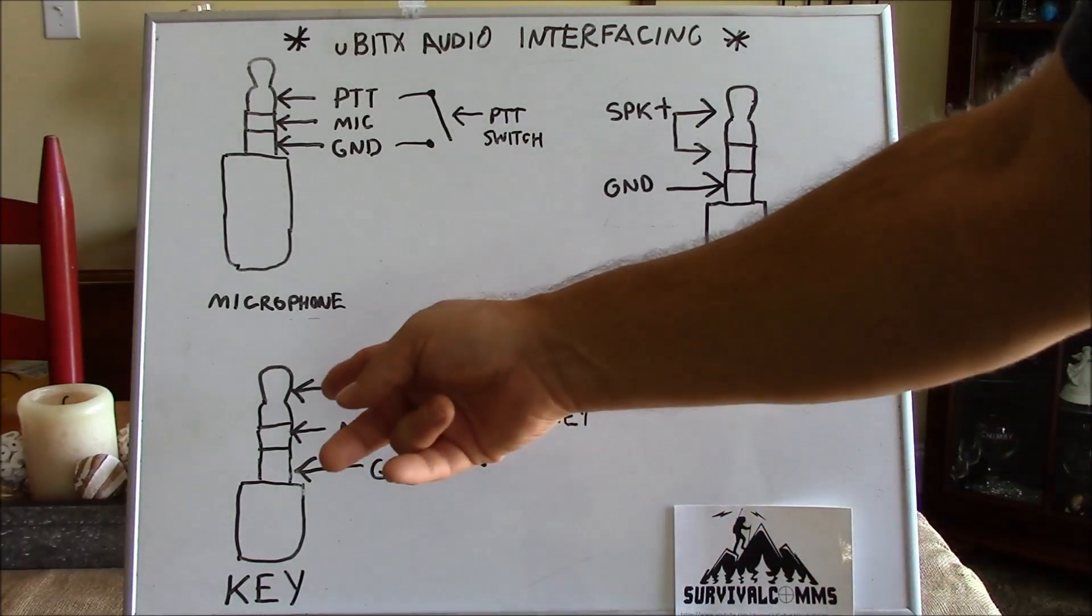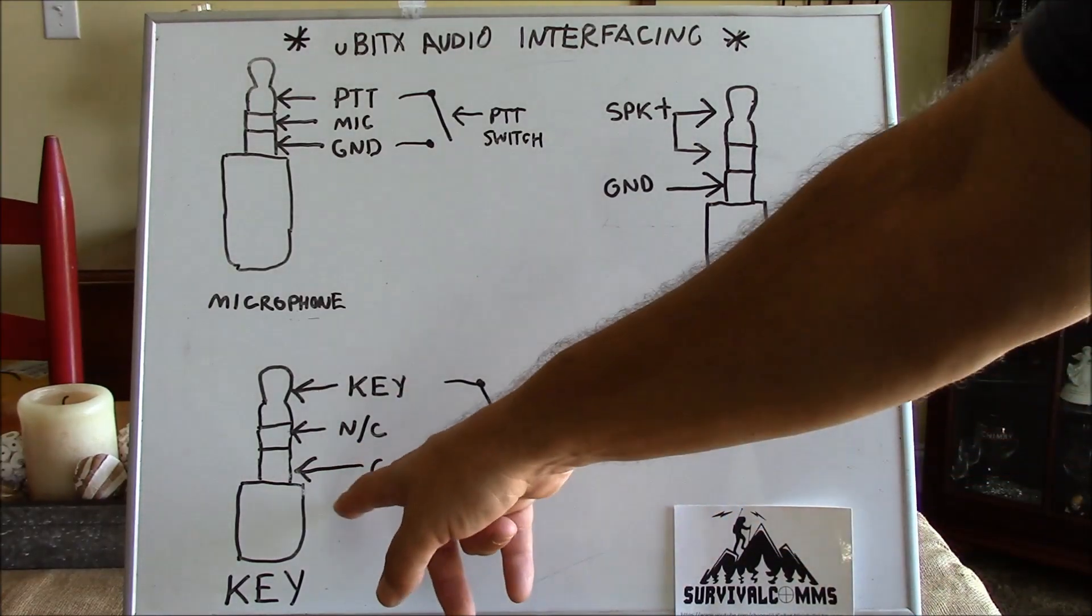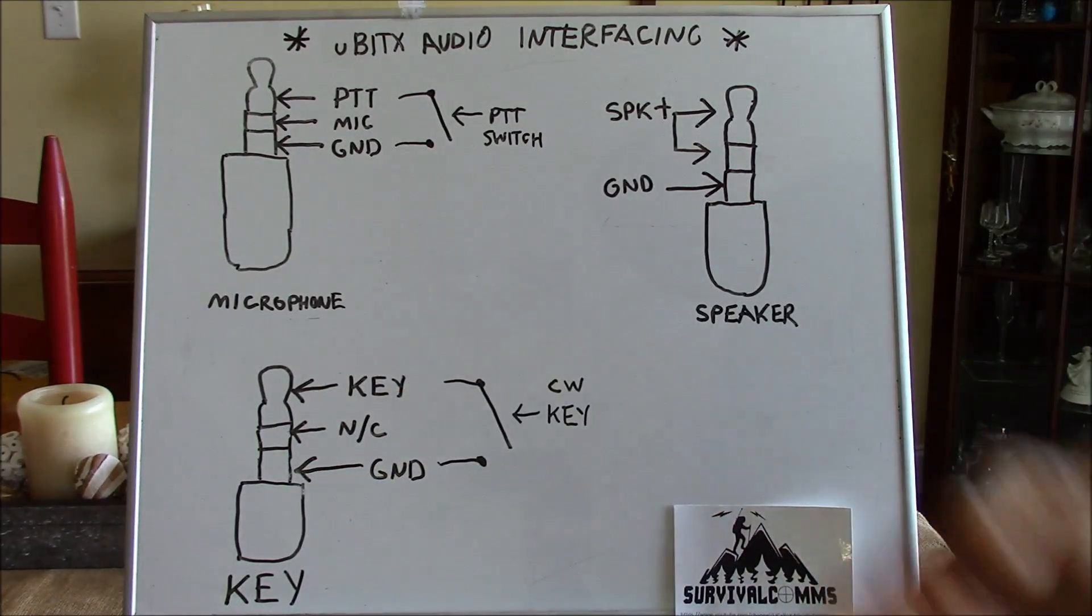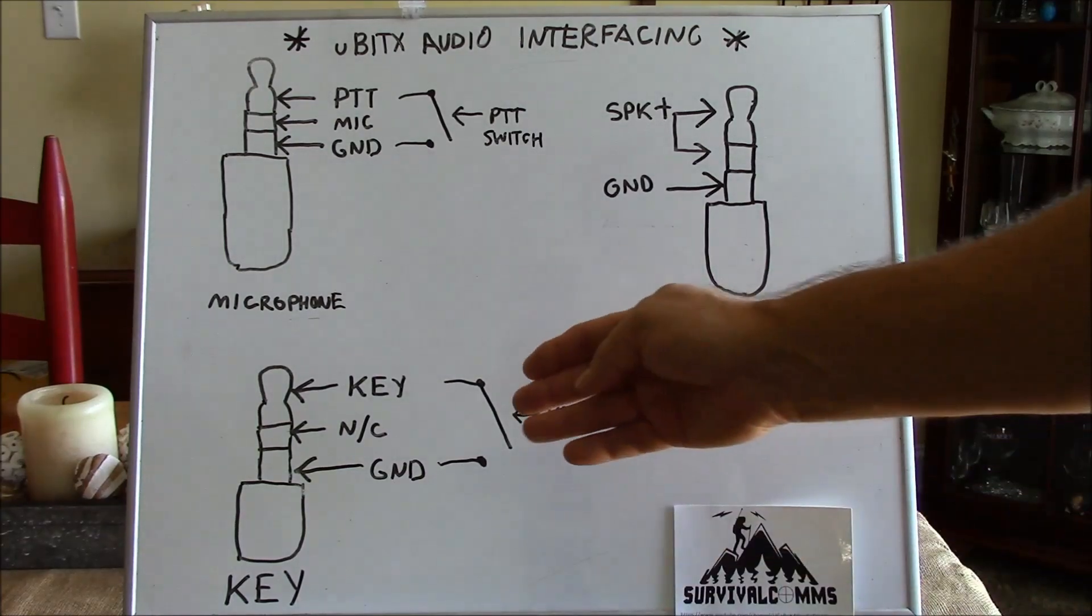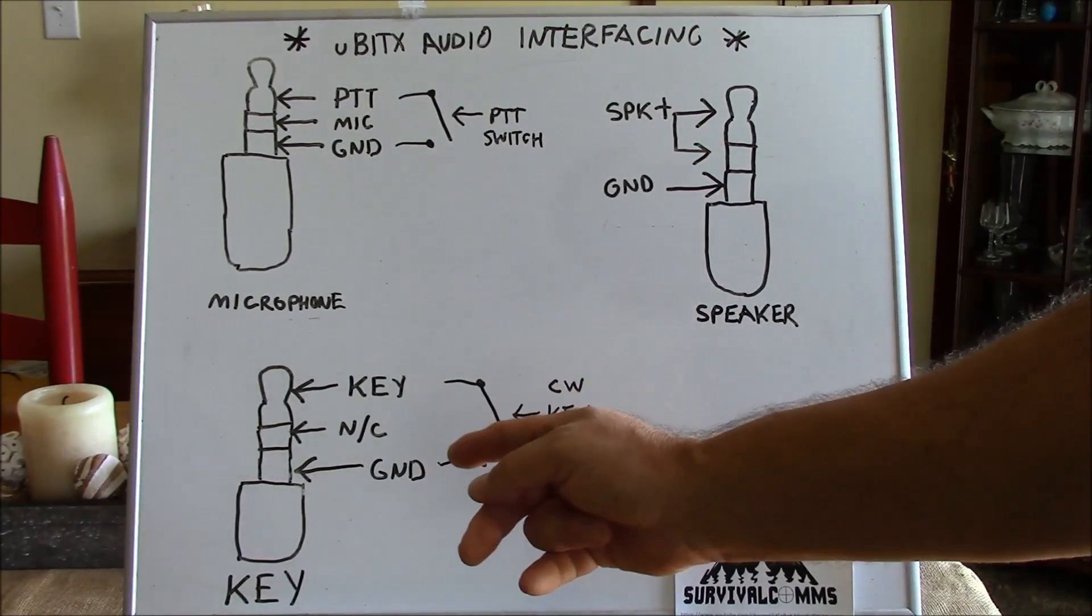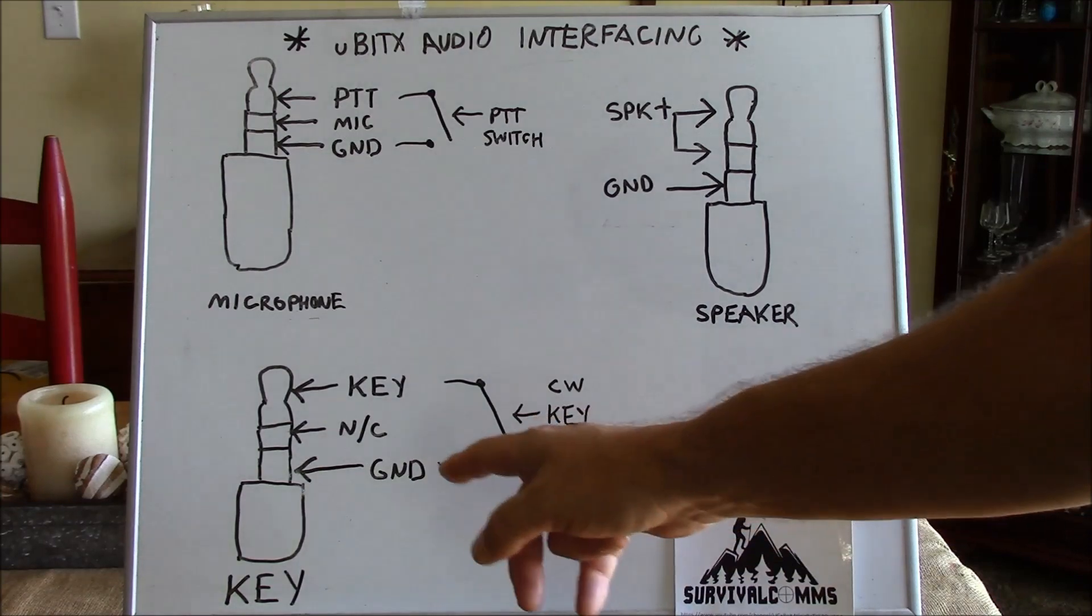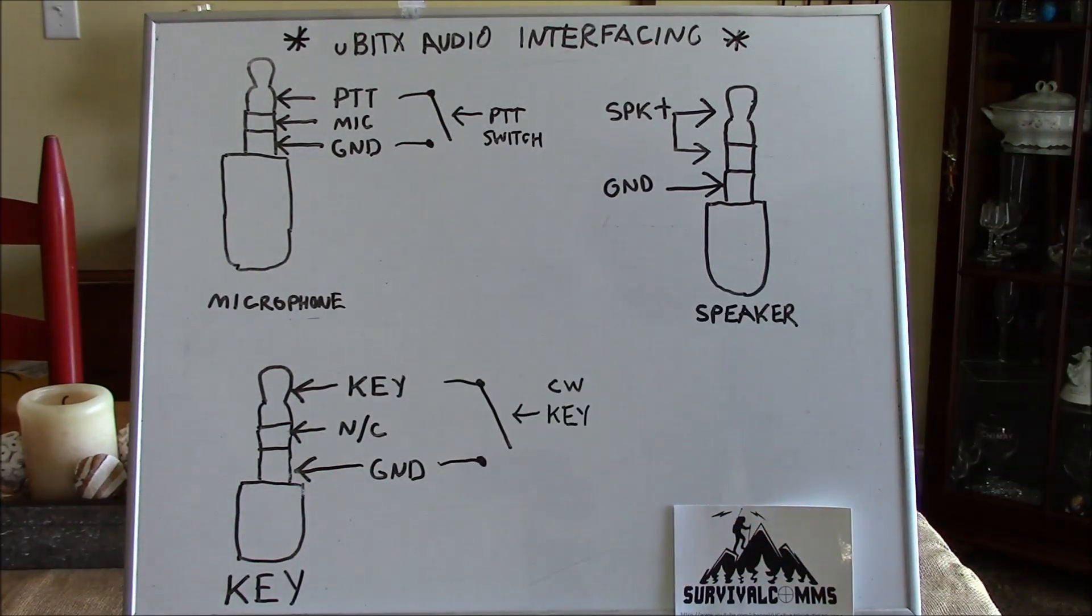On our Morse key, our tip is our key and then our sleeve and our ring is not connected. So what happens is when we close our CW key, it toggles the radio into a transmit mode.